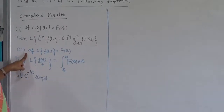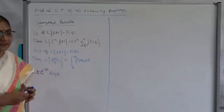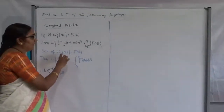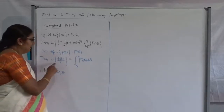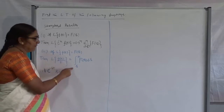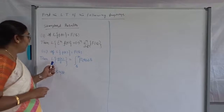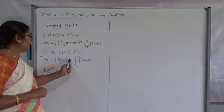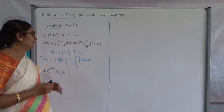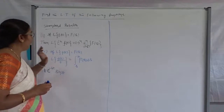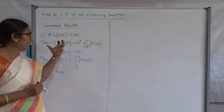The next standard result is: if the Laplace Transform of f(t) is capital F(s), then the Laplace Transform of f(t) divided by t can be written as the integral from s to infinity of capital F(s) ds. This means if we want to evaluate such a function, first find the Laplace Transform of f(t), then integrate from s to infinity.